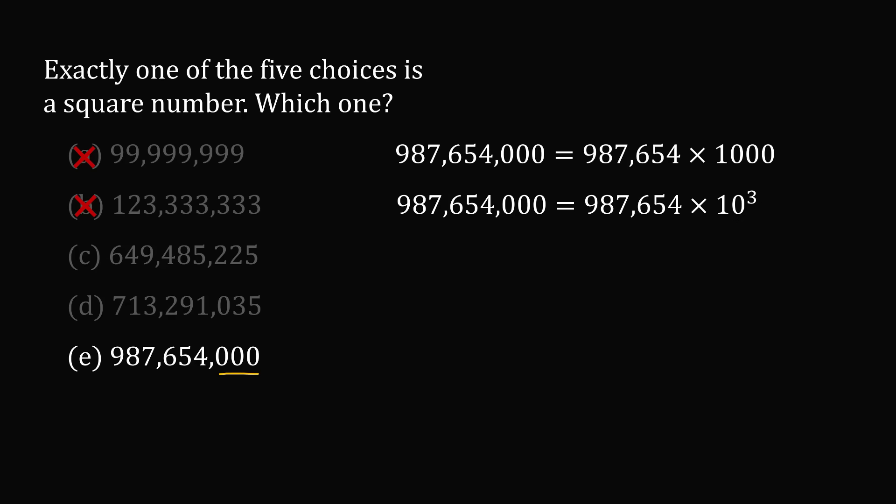1000 is equal to 10 to the power of 3. The prime factorization of 10 is 2 multiplied by 5. We can then distribute the exponent, so we have 2 to the power of 3 multiplied by 5 to the power of 3.